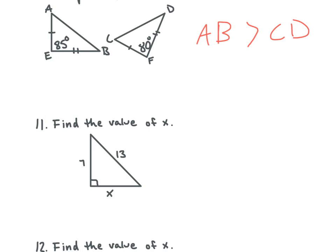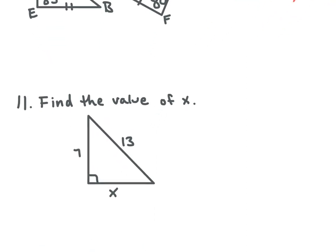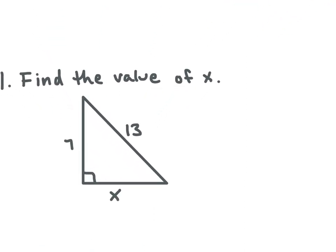Number 11 — find the value of x. What do we need to do? If it gives us two sides of the triangle and we have to find the third, what equation do we use? We don't know if this is a special right triangle, so it's just any type of right triangle. We have x squared plus 7 squared is equal to 13 squared — the Pythagorean theorem.